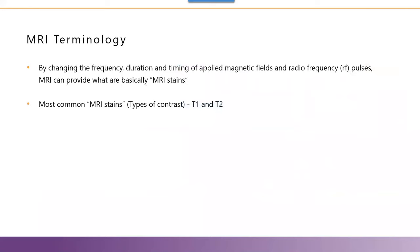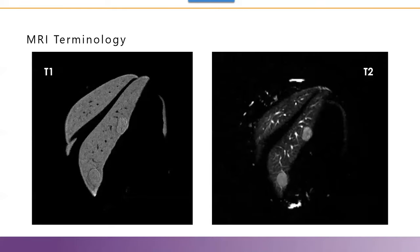I would like to introduce in short the MRI terminology. By changing the frequency, duration, and timing of applied magnetic fields and radio frequency pulses, the MRI can provide what are basically MRI stains. The most common MRI contrast types are T1 and T2. Here I am demonstrating the T1 and T2 contrast stains.